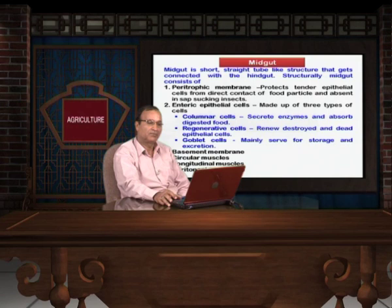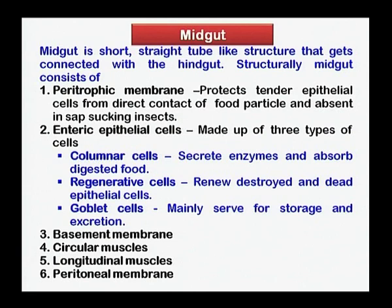The epithelial cells are made up of three types: columnar cells, regenerative cells, and goblet cells. Regenerative cells are very important because they renew destroyed and dead epithelial cells. Besides this, between the peritrophic membrane and the epithelial cells, a basement membrane is also present. Circular muscles, longitudinal muscles, and peritoneal membrane are also present, like in the foregut.